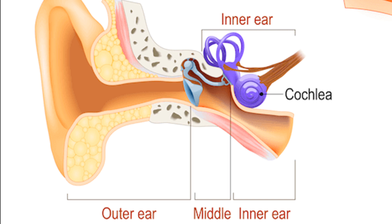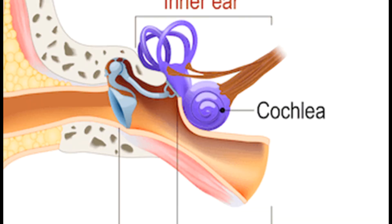The inner ear is the heart of both our hearing and balance systems. It contains the cochlea, a snail-shaped structure responsible for converting sound vibrations into electrical signals. We'll explore this process in detail in the next section.